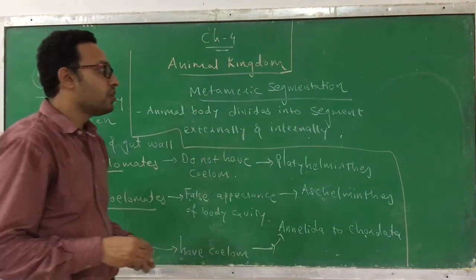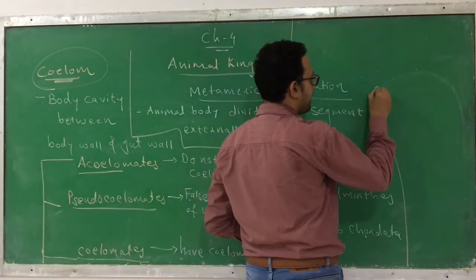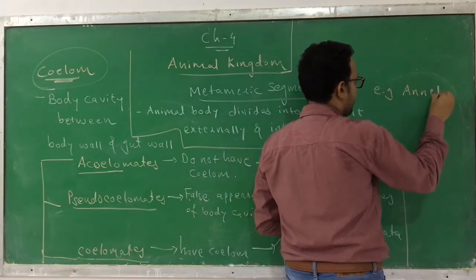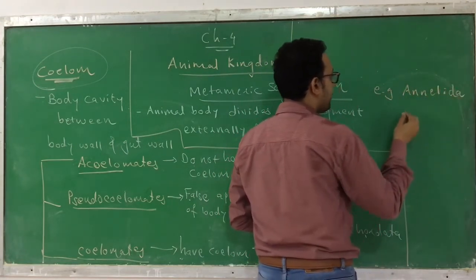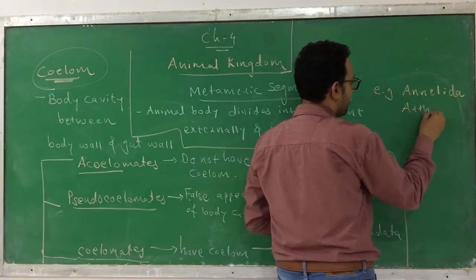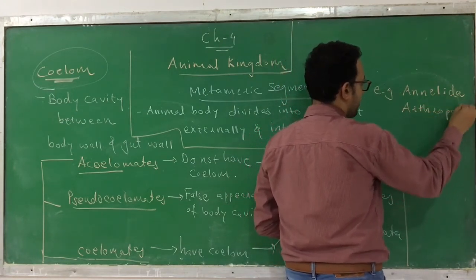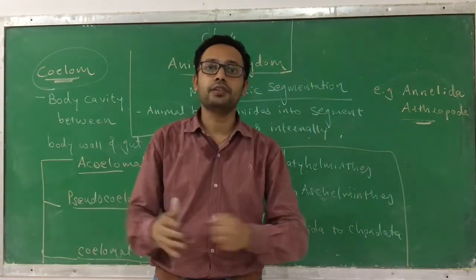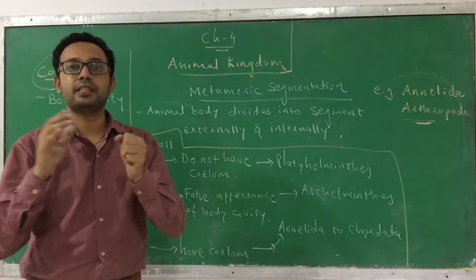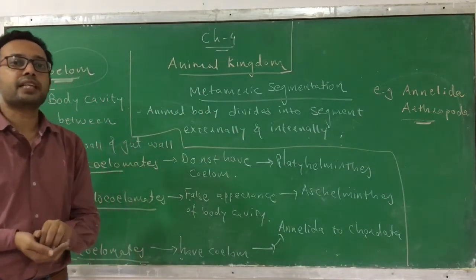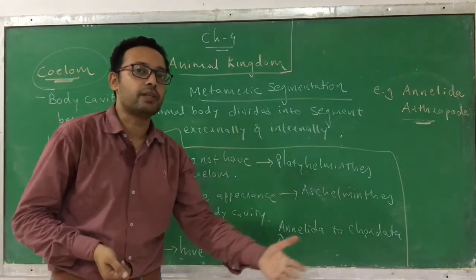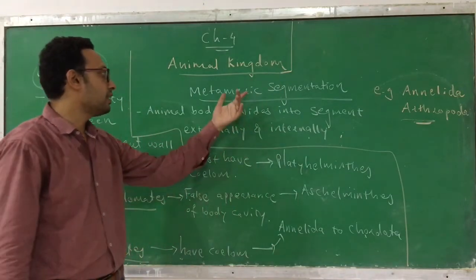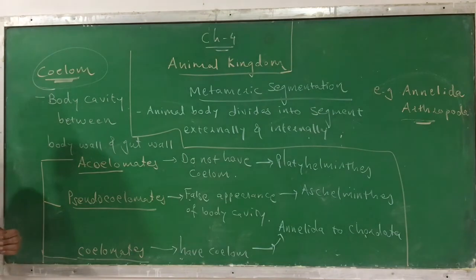This is the fifth criteria — metameric segmentation. Those who have metameric segmentation, the examples are Annelida and Arthropoda. You can only find metameric segmentation in Annelida and Arthropoda. In all other phyla, metameric segmentation is not found — meaning their body is not divided into equal segments both externally and internally. This is another criteria for classification.